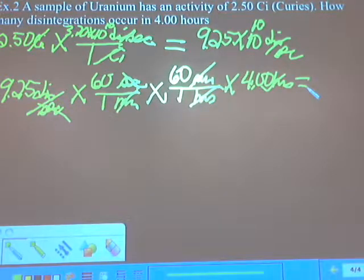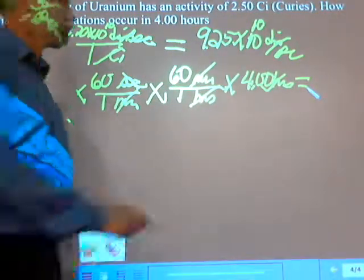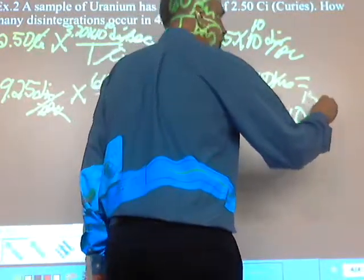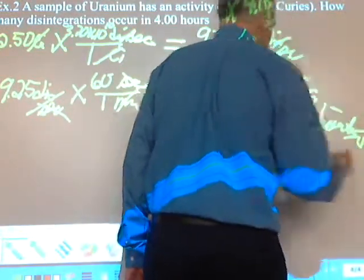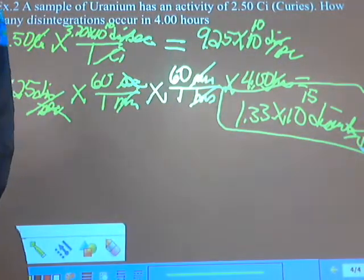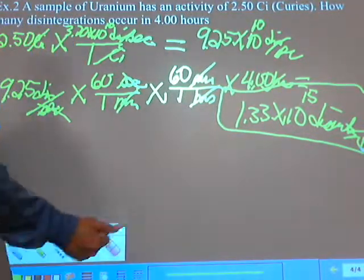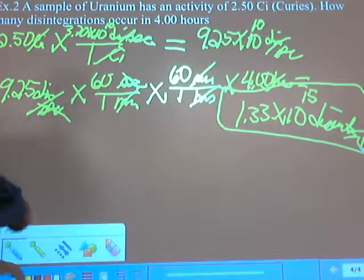The final answer is 1.33 times 10 to the 15th disintegrations. Your homework tonight is page 561, problems 23A, 24A, 25A — only A's — 27, 28, and page 574 problems 53 and 54.